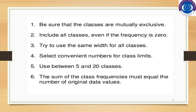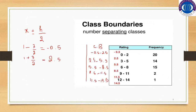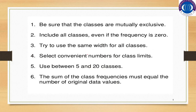Some points to keep in mind when making a frequency distribution: Be sure the classes are mutually exclusive — that means non-overlapping. Include all classes even if the frequency is zero; don't omit any class. Try to use the same width for all classes — that is most appropriate. Select convenient numbers for class limits. Use between 5 and 20 classes — minimum 5 and maximum 20 is found in the literature. The sum of all class frequencies must equal the total number of data values.